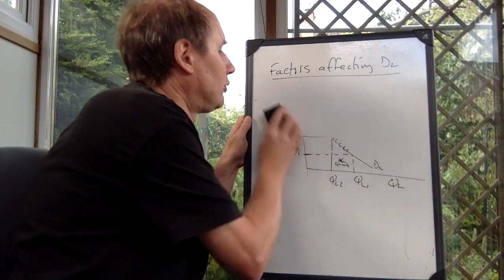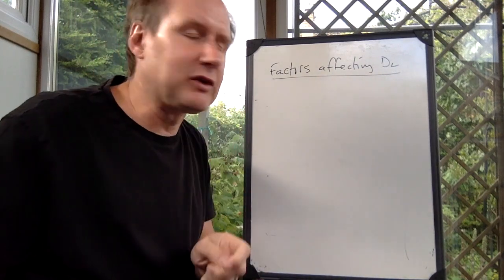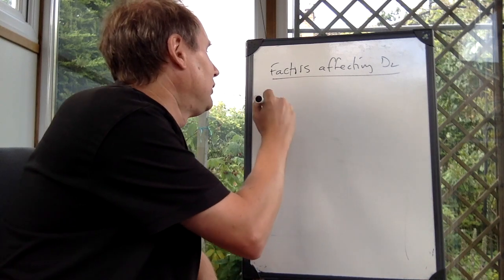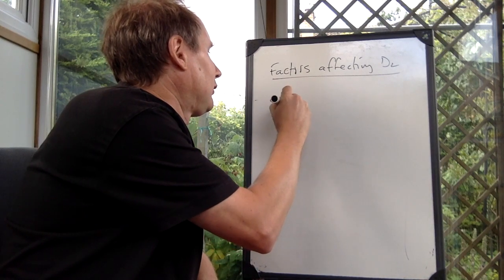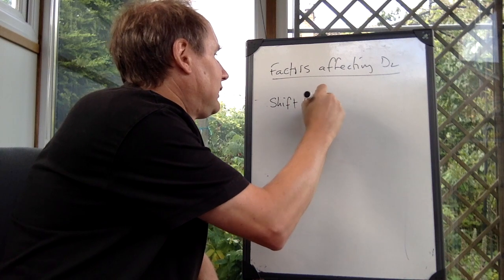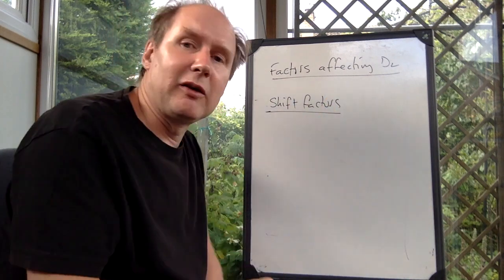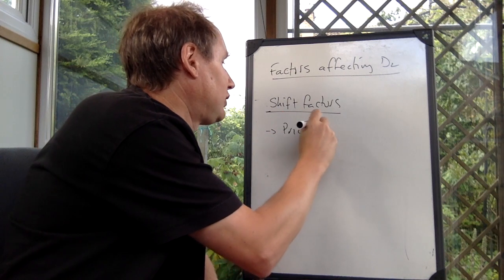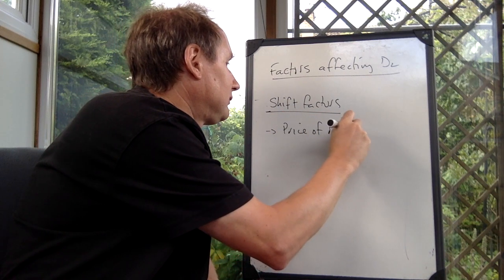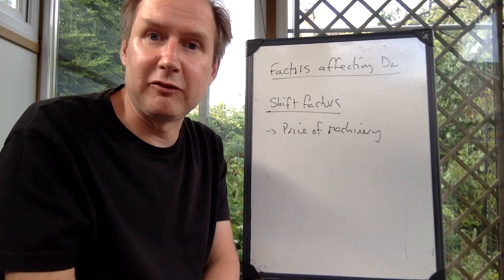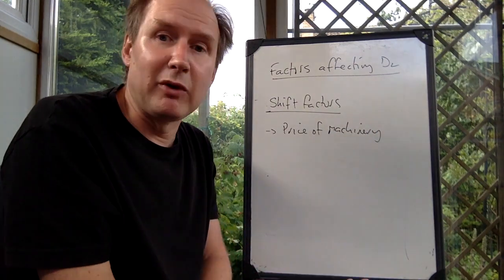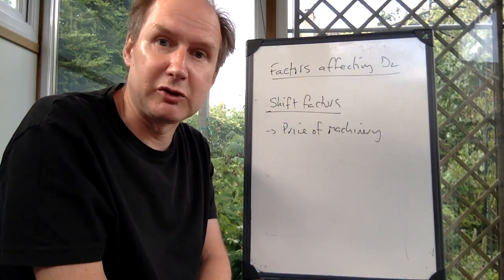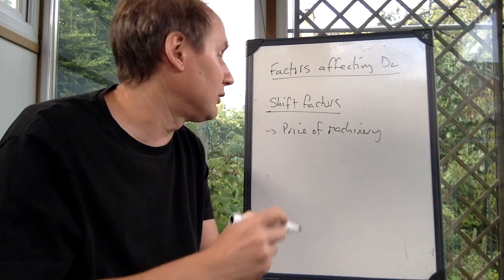What could cause the demand to shift? That's the other things that affect the demand for labour. If we look at shift factors, then that's anything apart from wage. It could be, for example, the price of machinery. If machinery becomes cheaper, it may well be the case that firms will switch away from labour and towards machinery. That would cause demand to shift inwards to the left.